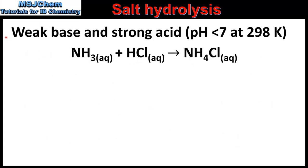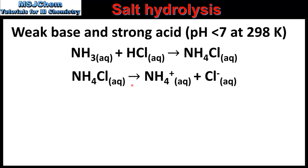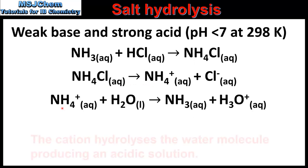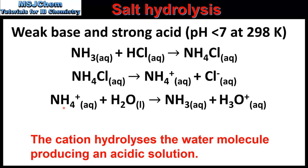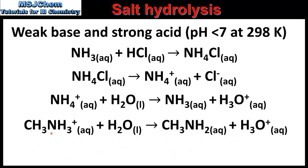Next we'll look at the reaction between a weak base and a strong acid. Here we have the reaction between ammonia and hydrochloric acid. The salt formed is ammonium chloride. Ammonium chloride dissociates to form ammonium ions and chloride ions. The ammonium ion is the conjugate acid of a weak base, therefore it is strong enough to hydrolyse water. This results in the formation of ammonia and hydronium ions. Due to the presence of excess hydronium ions, the pH is less than 7. Another example is the conjugate acid of methylamine; because this is a conjugate acid of a weak base, it is able to hydrolyse water, again producing excess hydronium ions. To summarize, the reaction between a weak base and a strong acid produces an acidic salt.